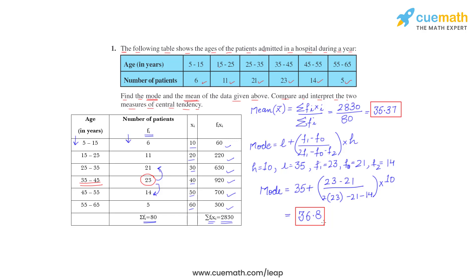So the modal age is 36.82 years, which means, which interprets that maximum patients admitted to the hospital are of age 36.82 years.